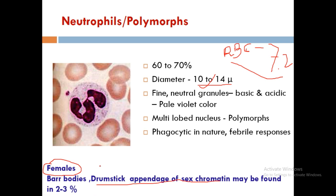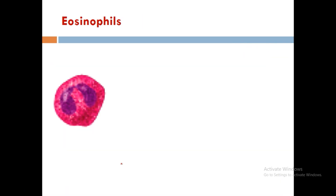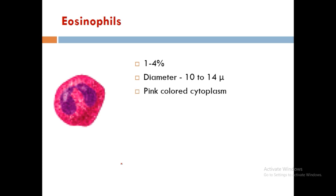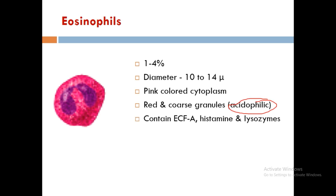Eosinophils constitute around 1 to 4 percentage of WBCs. Their diameter is 10 to 14 microns, with pink-colored cytoplasm and red coarse granules that are acidophilic. They contain ECFA (eosinophilic chemo-attractant factor A), histamine, and lysozymes.